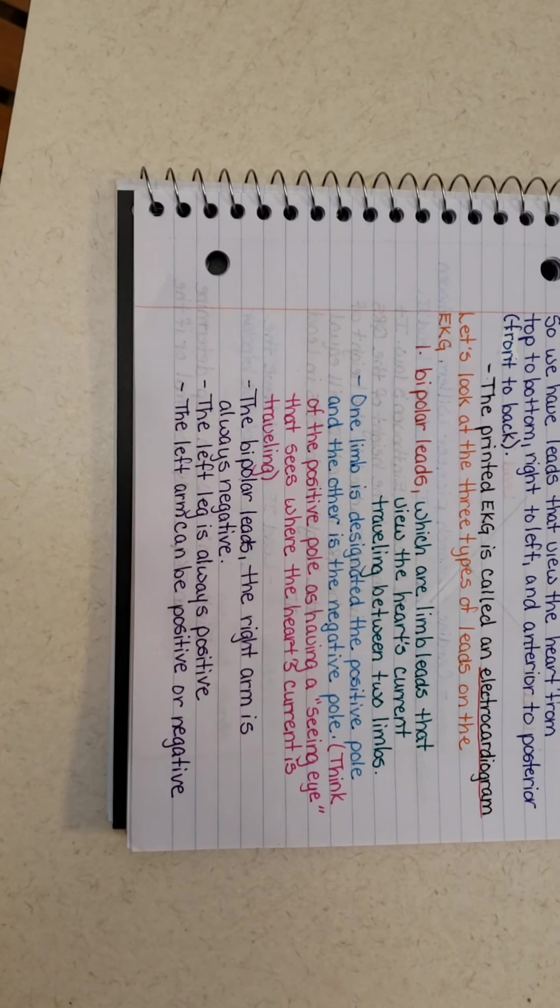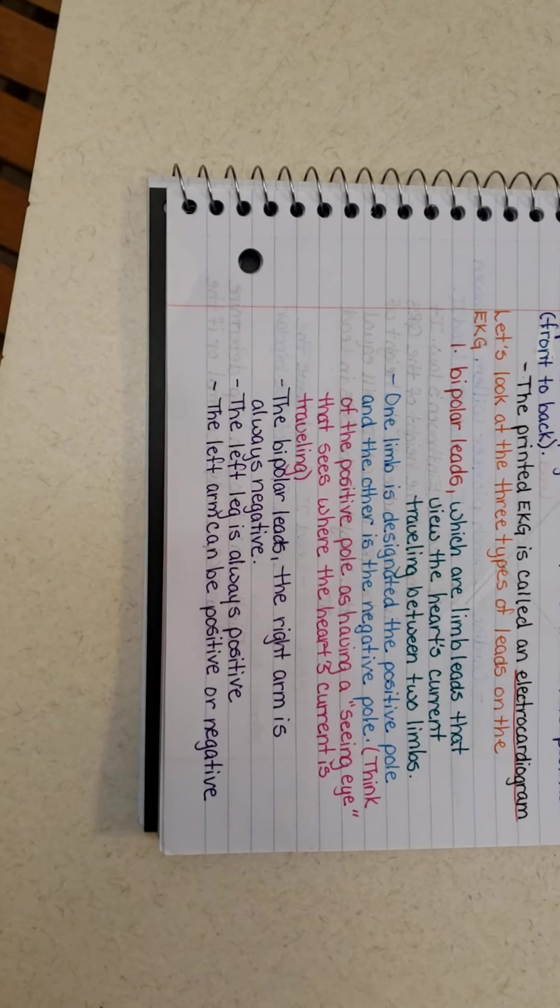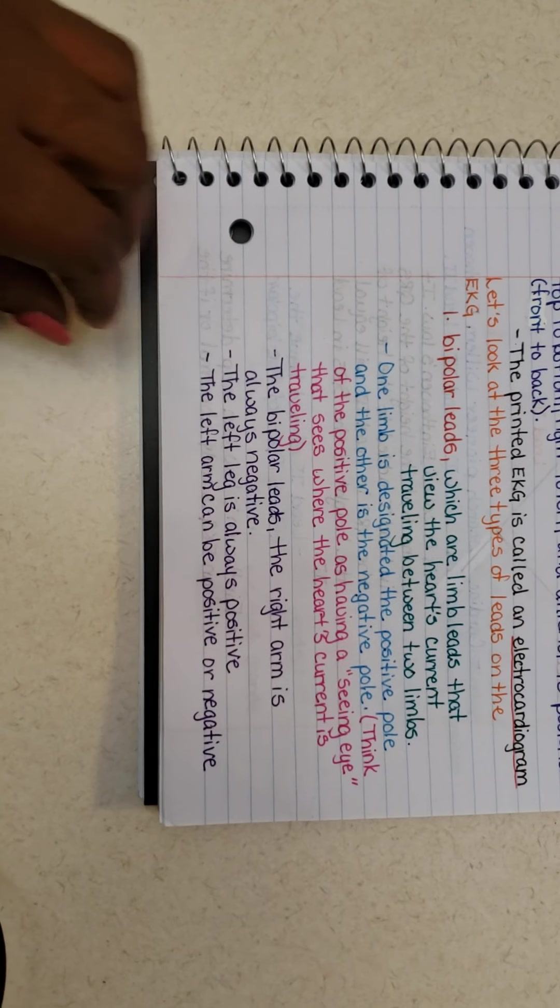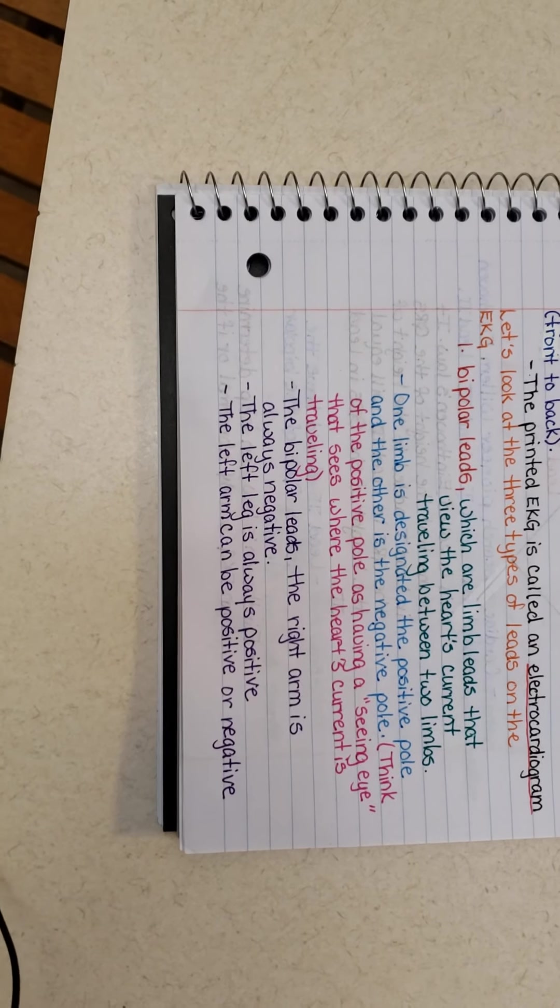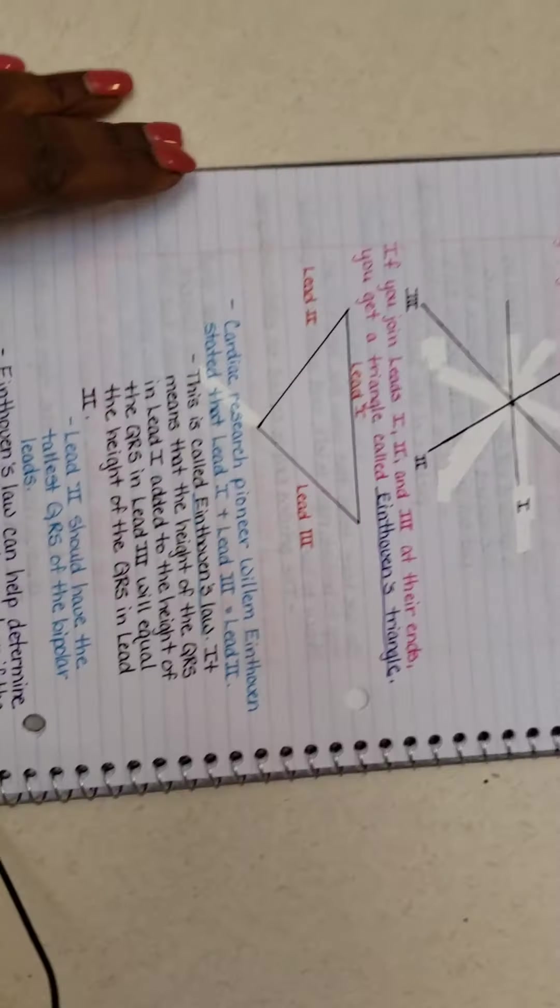Think of the positive pole as a seeing eye that sees where the heart's current is traveling at that specific time and destination. The bipolar leads, the right arm is always negative. The left leg is always positive and the left arm can either be positive or negative depending on which direction the heart current is picking up.